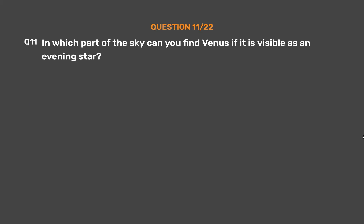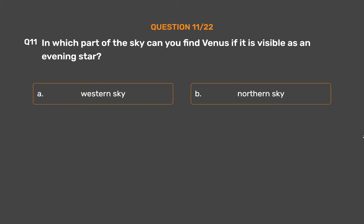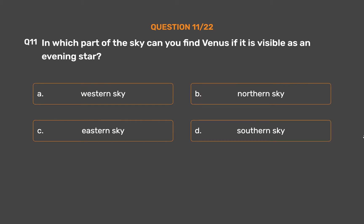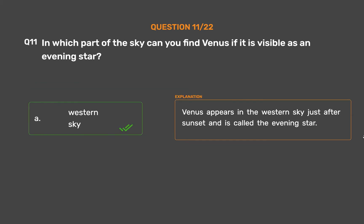Question number 11. In which part of the sky can you find Venus if it is visible as an evening star? Option A: Western sky. Option B: Northern sky. Option C: Eastern sky. Option D: Southern sky. The correct answer is Option A: Western sky. Venus appears in the western sky just after sunset and is called the evening star.